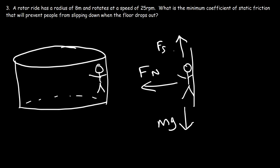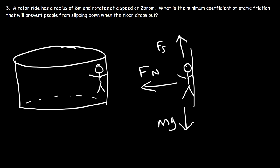As you increase the speed, the normal force increases, which in turn increases the static frictional force, which supports the weight of the person. There's a minimum speed at which the rotor ride has to spin in order to support the weight of the person. Our goal is to find the minimum coefficient of static friction — we need just enough frictional force to support the weight, so we set Fs equal to mg.